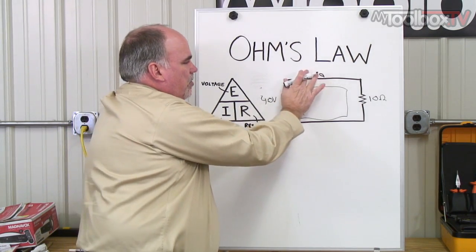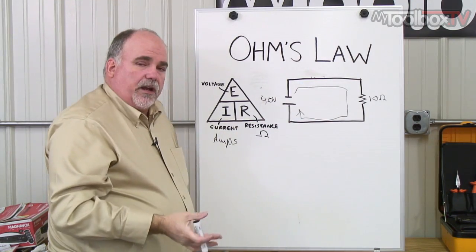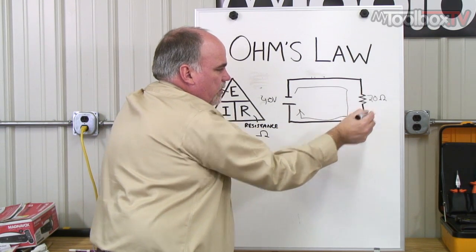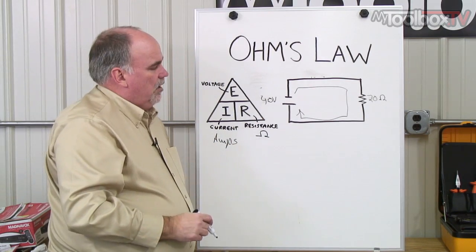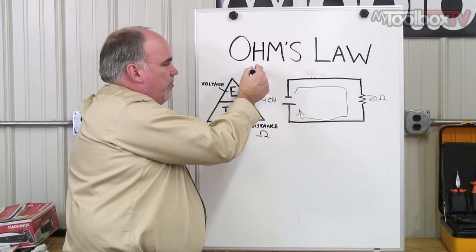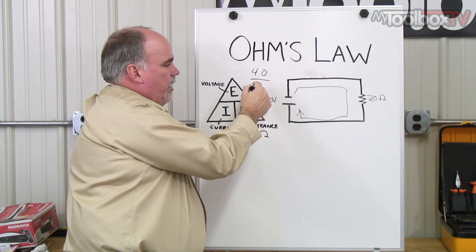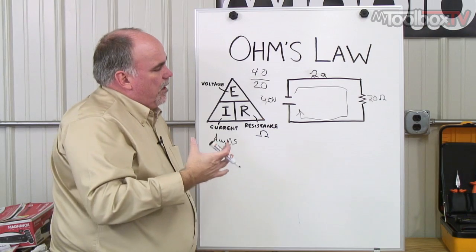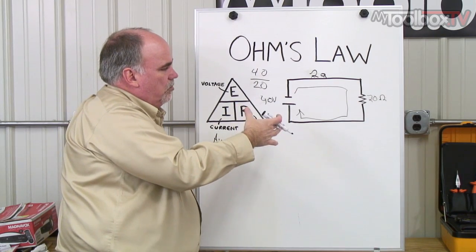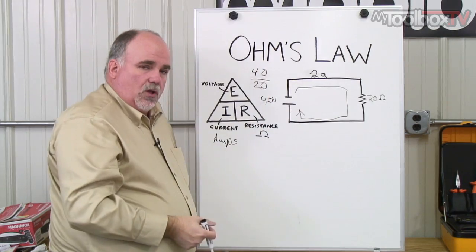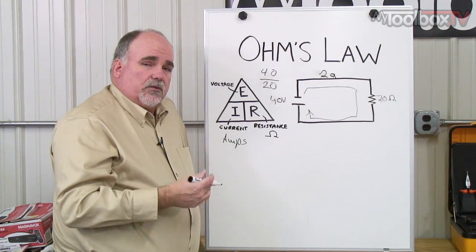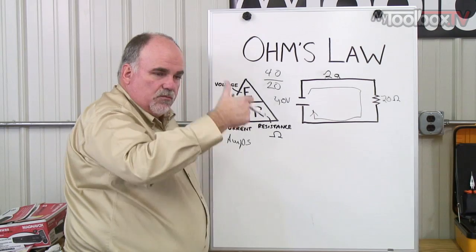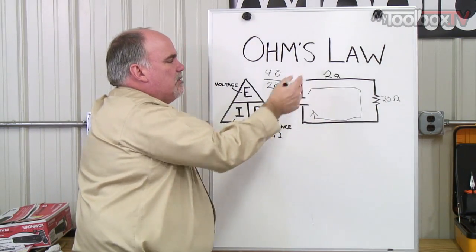Now, what happens in this circuit if we leave voltage at 40, yet we change the resistance? Let's double the resistance up to 20. Now we've got more resistance. Well, same formula. Now it's 40 volts divided by 20 ohms. And what's that give us? About 2 amps. So the relationship can be shown by Ohm's law, and it's so important that you understand that for everything you might get involved in, with troubleshooting, everything. More voltage on the same resistance means more current. More resistance to the same voltage means less current.